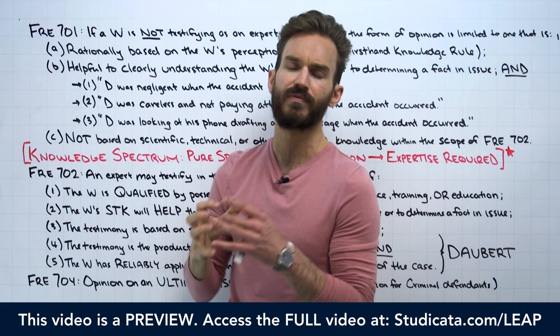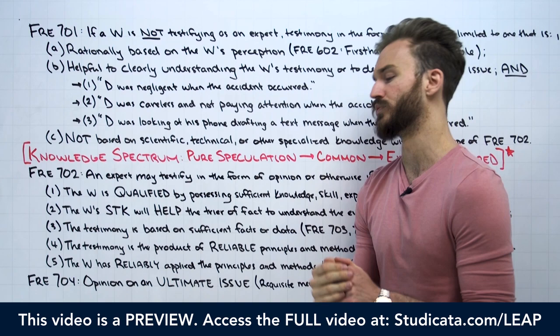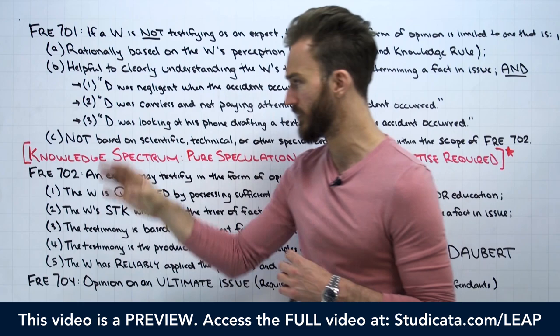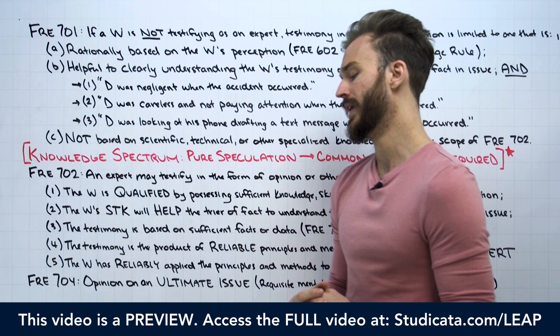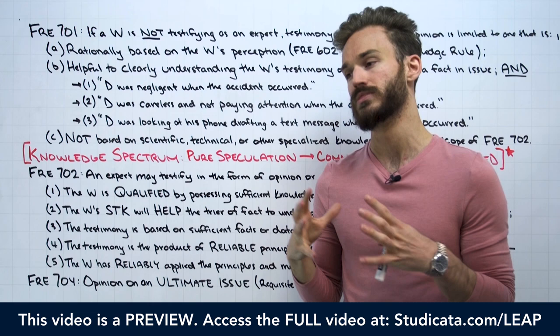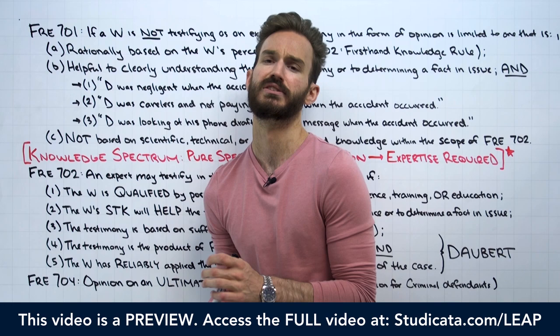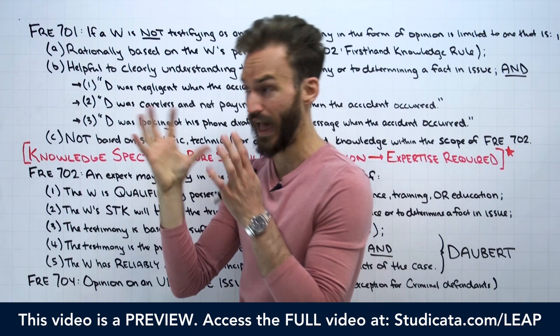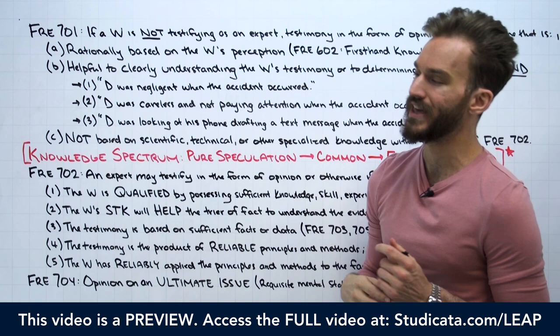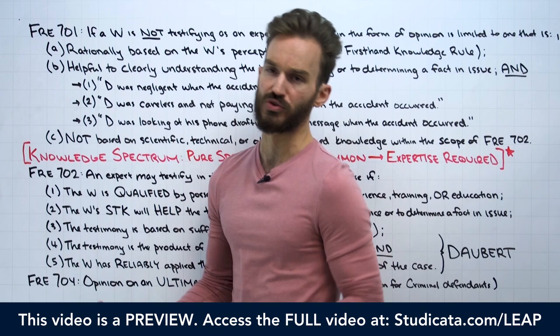This is where Rule 701 is really illustrated — the second element. If we have a lay witness, a non-expert giving an opinion, that opinion has to be helpful to the fact-finder, the jury, in determining a fact that is at issue in the case. We don't want a lay witness to just get up there and basically choose sides. Let's look at a typical car accident, personal injury negligence case.